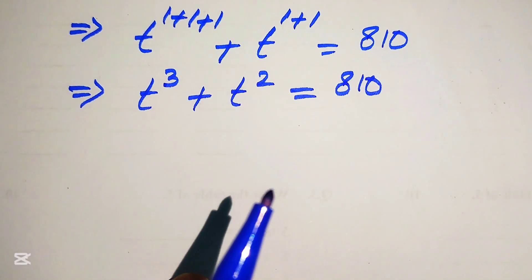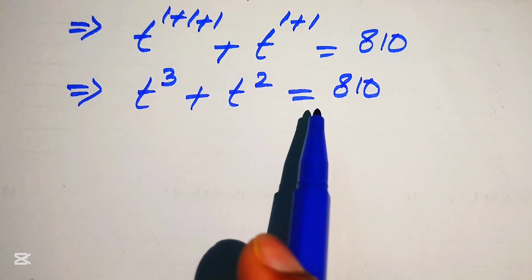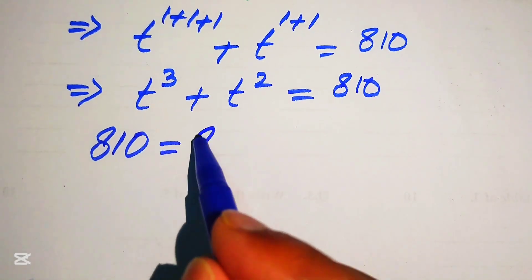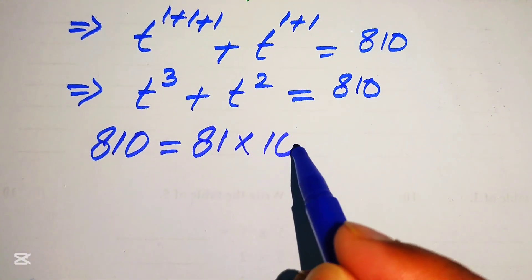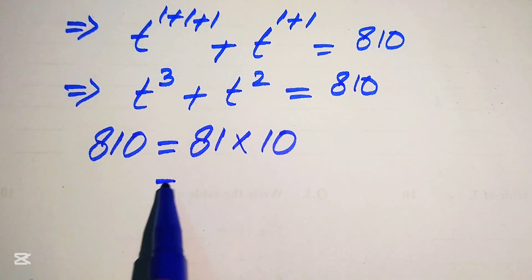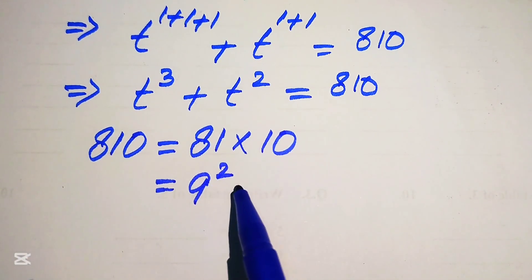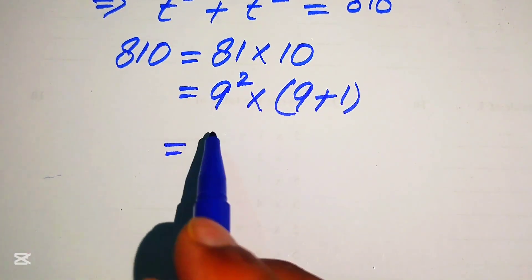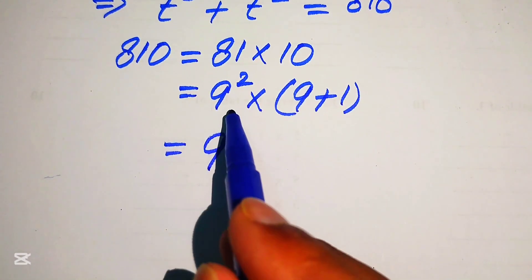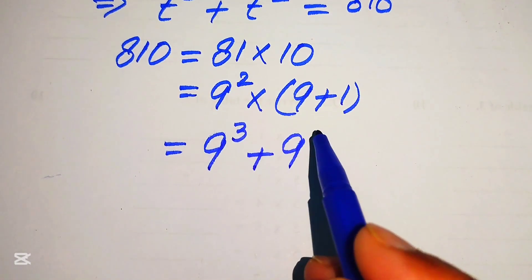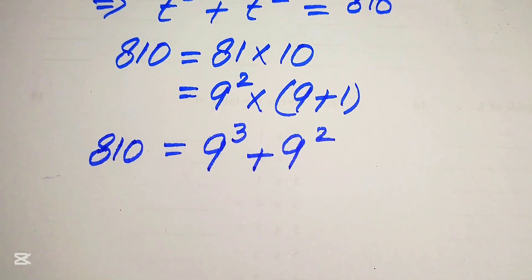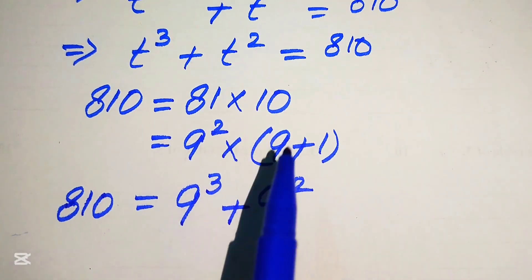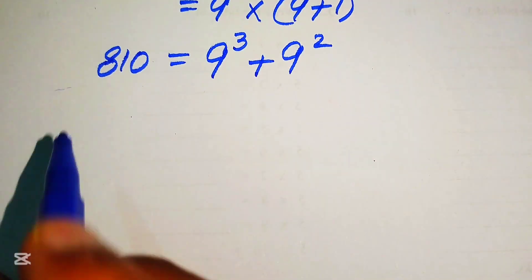In the next step we simplify the right hand side. We write 810 as 81 multiplied by 10. Then we write 81 as 9 squared, and 10 as 9 plus 1. Multiplying 9 squared on both values gives us 9 cubed plus 9 squared equals to 810. So we now replace 810 with 9 cubed plus 9 squared so that our equation can be written in this form.